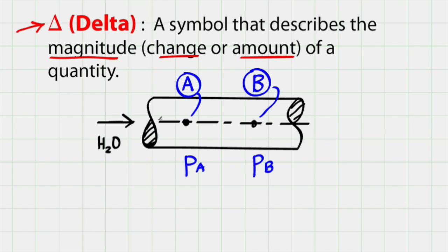For example, this sketch shows water flowing through a pipe. We can define a point at A and a point at B, define a pressure at A and a pressure at B.